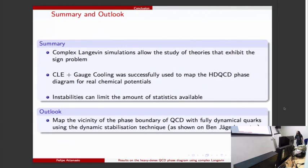To summarize my talk: we used complex Langevin to simulate a theory with the sign problem. Combining with gauge cooling we could map the phase diagram for heavy quarks with real chemical potential. Of course we saw some instabilities we had to deal with them somehow, and sometimes they limited the amount of statistics available.